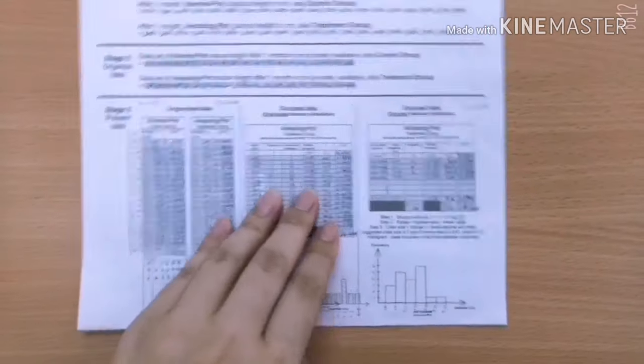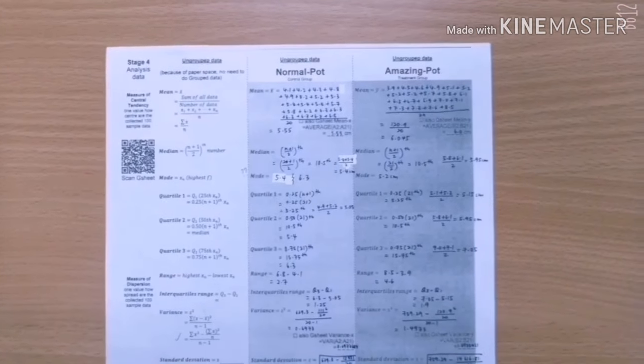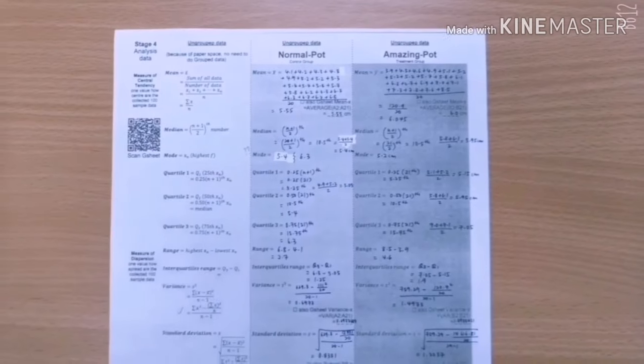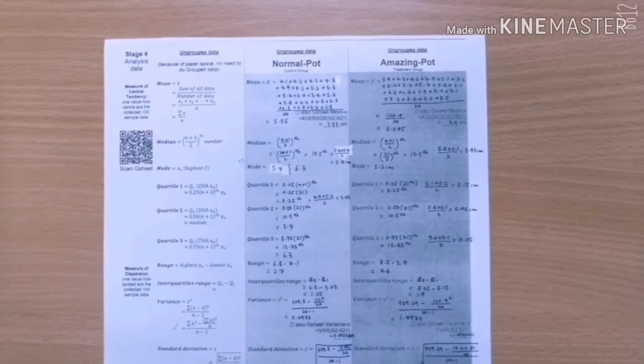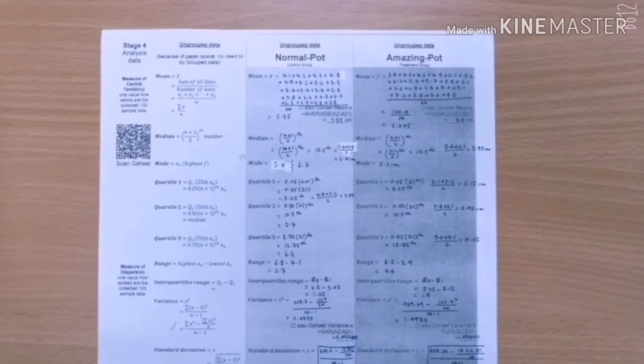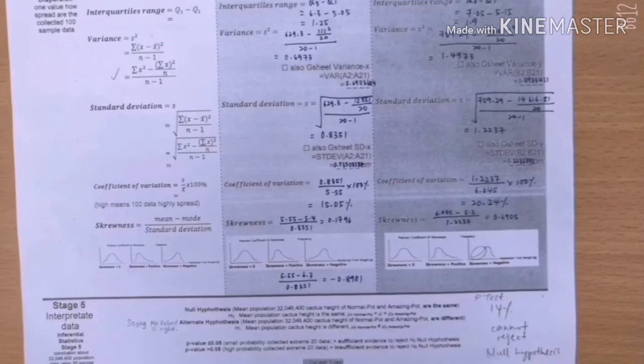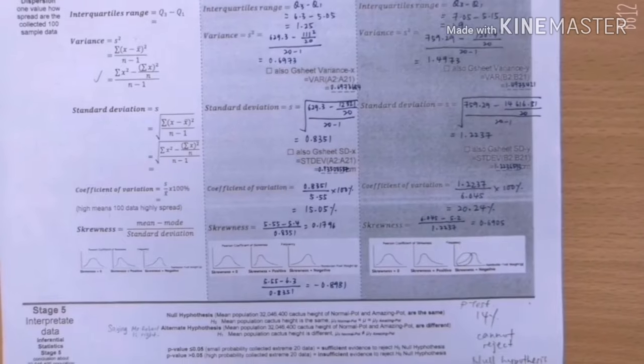Let's move on to stage four. There's ungrouped data of normal pot and amazing pot. As you can see, for normal pot, there are two modes here, 5.4 and 6.3. Therefore, in terms of skewness, we have to do two types using the two different modes. That is, we get positive skewness and also negative skewness.